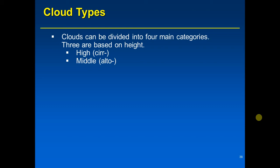The prefix 'alto-' is interesting because in Spanish 'alto' means tall, yet clouds beginning with 'alto-' are found in the middle part of the cloud region. The height categories are high, middle, and low — low clouds have the Latin prefix 'strat-', although there's one low cloud that begins with another word but has 'strat' as a root.